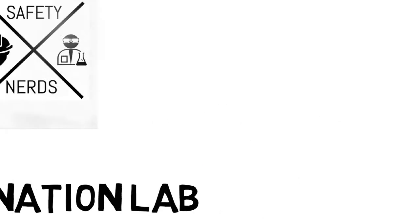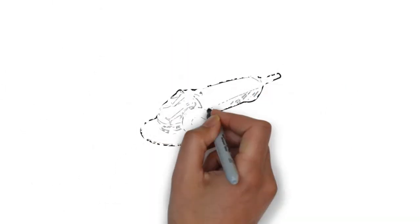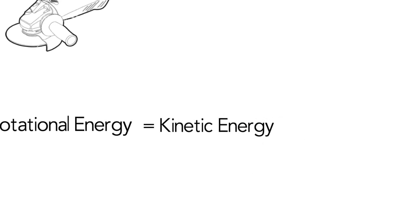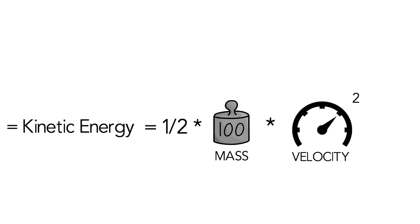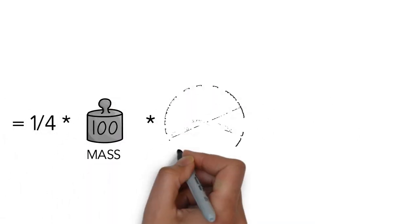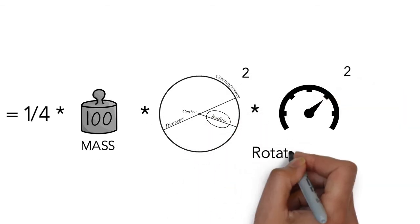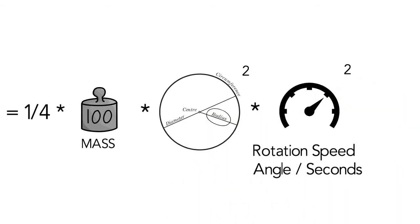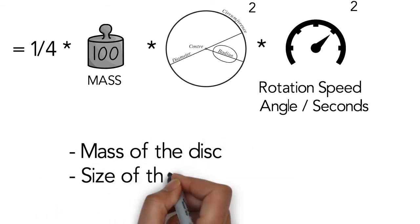Welcome to the Safety Nerds Explanation Lab. Now we are going to try to understand the science behind grinder kickback. Grinders work under the principles of rotational energy. Rotational energy is kinetic energy, which is equal to one-half times the mass times the velocity squared. In the case of a grinder, the kinetic energy is rotational. The formula is one-quarter times the mass of the disk times the radius of the disk squared times the rotational speed of the disk squared, which is in angles per second. The formula is related to the mass of the disk, the size of the disk, and the speed the disk is spinning.